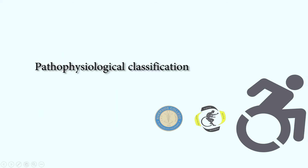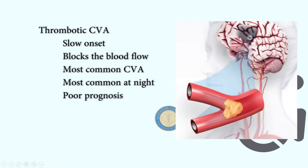Next we have the four pathophysiological classifications. First is thrombotic stroke. It is a slow-onset type of CVA in which there is blockage to the blood flow leading to ischemia. It is the most common type and most commonly occurs at night. Its rescue drug is usually thrombolytics.